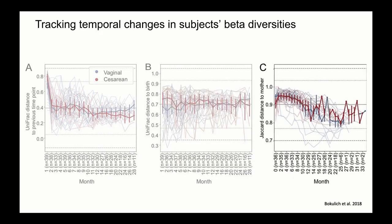Now let's look at panel C, where altering the distance metric of interest can aid our interpretations. In the last two examples, A and B, we were looking at UniFrac, while in C we're looking at Jaccard. Jaccard distances are a measure of dissimilarity and indicate the proportion of features not shared. By using this method with first distances, we can track the proportion of features not shared across time or from a baseline. In this case, the baseline was the mother's gut microbiome. Early on, there aren't many features shared between the mother and infant gut microbiome, but the proportion of shared features increases after the first year of life, as you can see here.